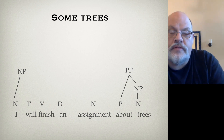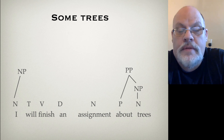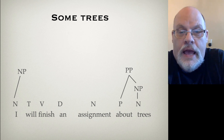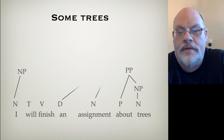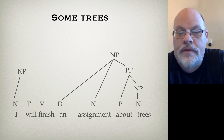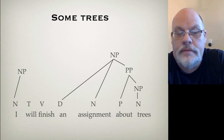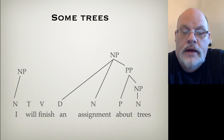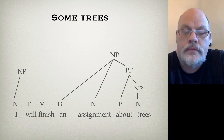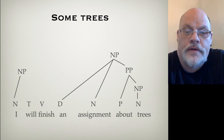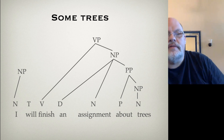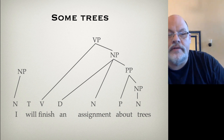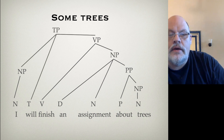I drew the PP for 'about trees' first because this prepositional phrase modifies 'assignment' — I needed to construct it before hooking it into assignment. Assignment has two modifiers: the determiner 'an' and the prepositional phrase 'about trees.' We stick all three things together according to the principle of modification and they give us a noun phrase — a determiner followed by a noun followed by a prepositional phrase. Now we do the VP. The tense node is not part of the VP; it's part of the TP. The verb phrase consists of the verb plus the noun phrase 'an assignment about trees.' Then we have a noun phrase, a tense node, and a verb phrase — that gives us a TP.